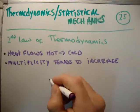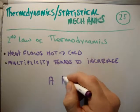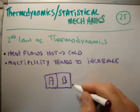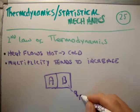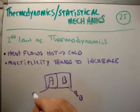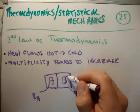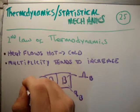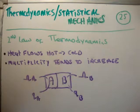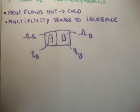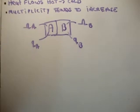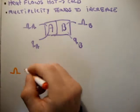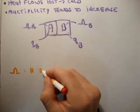Going back: we had two systems, A and B — two ideal gases or two solids. Each has Q_B units of energy in B and Q_A units of energy in A, and each has its own multiplicity: the multiplicity of B and the multiplicity of A. For those who haven't seen my videos before, what does multiplicity mean?